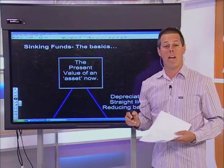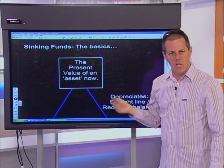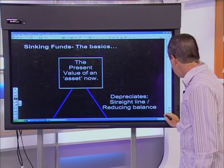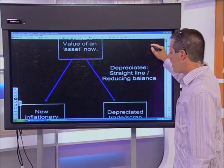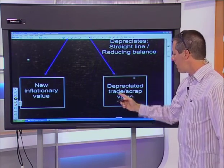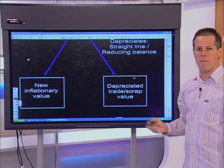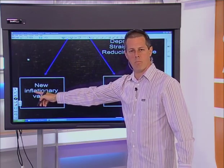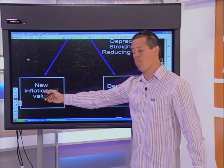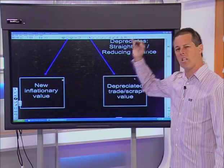Now let's look at sinking funds — not 'stinky' funds! Generally you start with an asset, for example a car or machinery, that will depreciate in value. You want to replace it in the future. Your current asset depreciates — it has a trade or scrap value. Meanwhile, a replacement will cost more due to inflation. The sinking fund is a careful saving scheme: you predict how much to save so that in the future you can buy the new item.